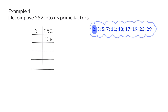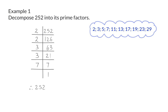Again, I ask myself the same question: what is the smallest prime number that 126 can be divided by? And again that will be 2, leaving us with 63. Now, the smallest prime number that 63 can be divided by is 3, and that gives me 21, which can once again be divided by 3 to give me 7. And 7 is a prime number, so it can only be divided by 1 and itself. We divide by 7 to end with 1, and as soon as I get a value of 1, I know that I've decomposed the value completely. So 252 can be broken up into 2 times 2 times 3 times 3 times 7.